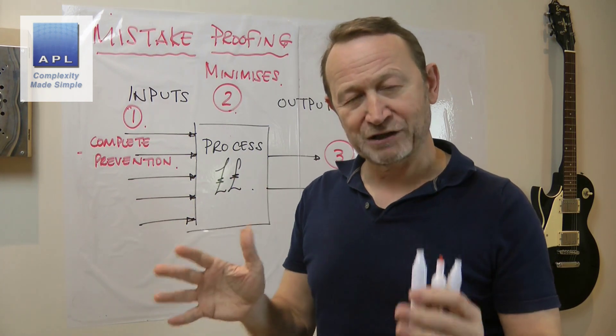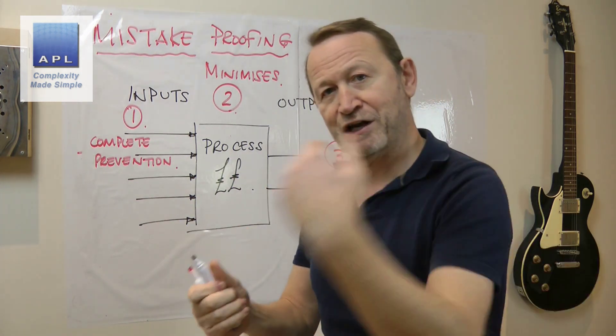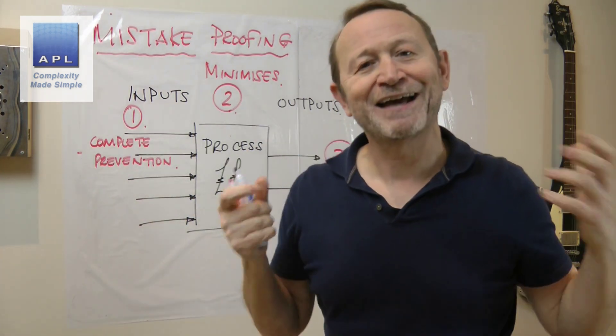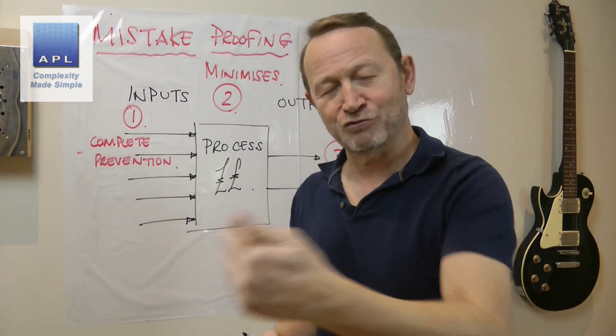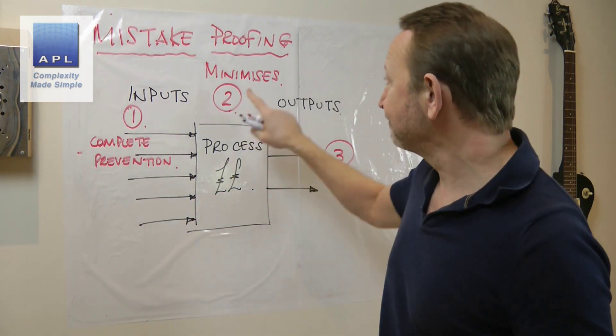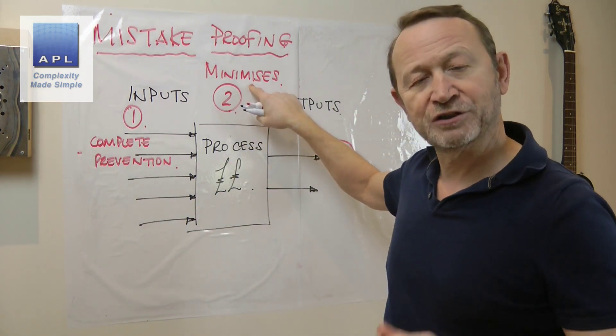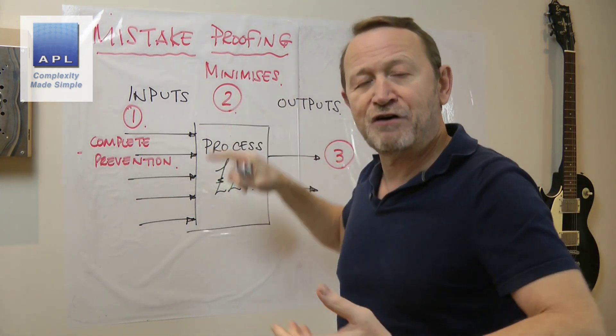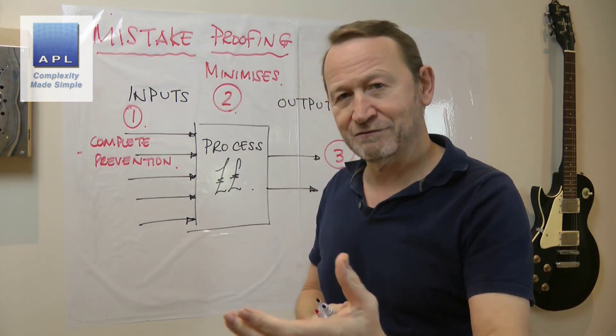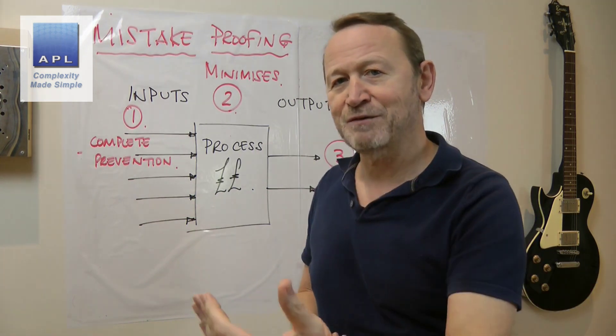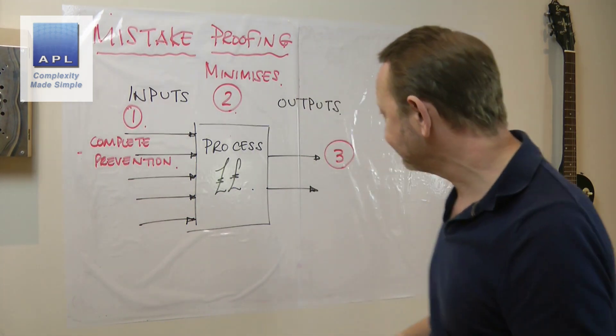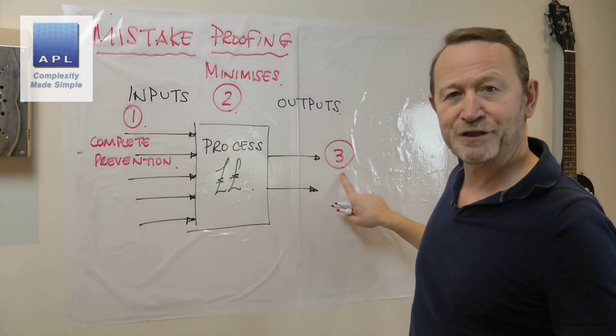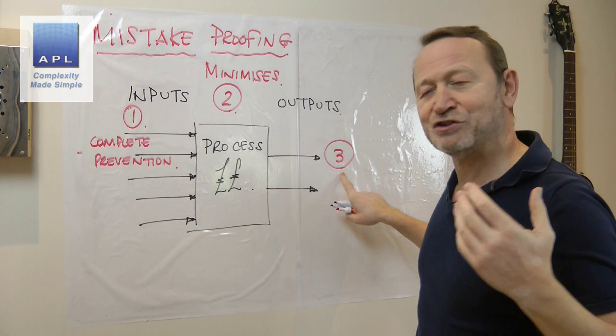Everything in the system at that point might be rejectable but it's just that one batch that's rejectable. What you don't do is you don't run the plant all day batch after batch after batch and then suddenly realize everything that you've made today is rejectable or reworkable. So things like alarms and that sort of thing, they are mistake proofing devices. They don't prevent the problem but they minimize the error.